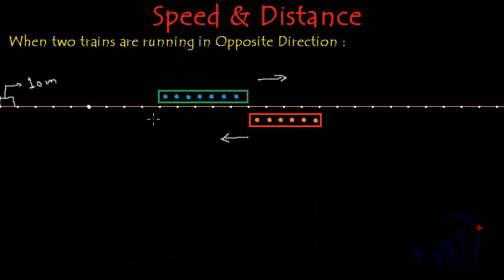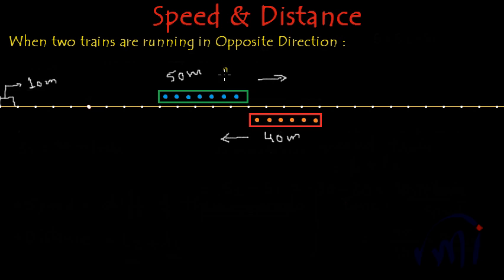So what will be the length of the green train? The length of the green train will be 1, 2, 3, 4, 5 partitions — that is 50 meters. And the length of the red train will be 40 meters, equal to 1, 2, 3 and 4 partitions of the line. So the length of the red train is 40 meters and the length of the green train is 50 meters. Now let's assume the speed of the green train as 20 meters per minute.